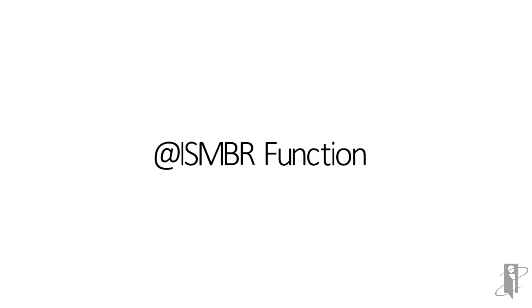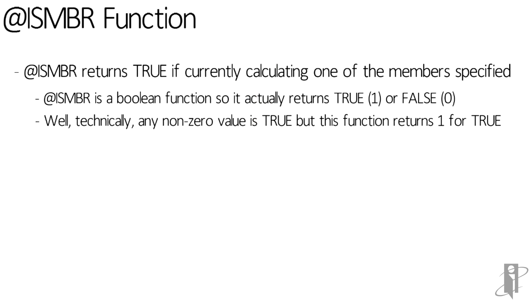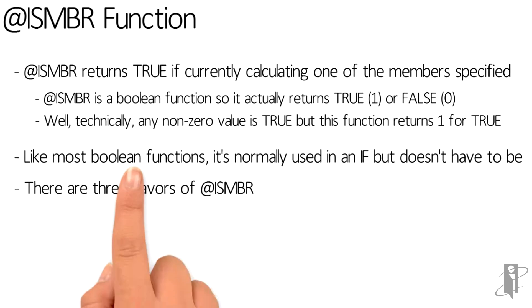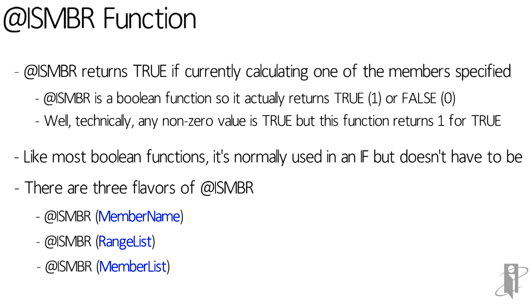Now in most cases, people will say isMember and then a specific member name. But there are actually three flavors of isMember. You can specify a member, you can specify a range, or you can specify a list of members.